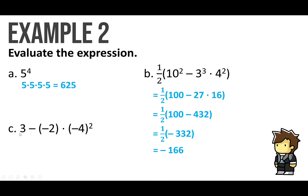For the last problem, we have 3 minus negative 2 times negative 4 to the 2nd power. Remember, for order of operations, we do parentheses and then exponents first. Negative 4 times negative 4 gives us 16. Also, I'm going to change the negative and negative into a positive, so this becomes 3 plus 2 times 16. Multiply first, not add: 2 times 16 is 32. Then 3 plus 32 gives us 35 for our answer. Easy stuff.